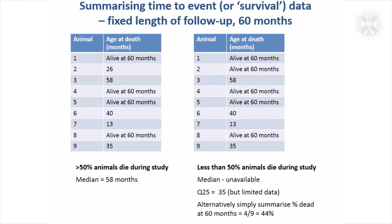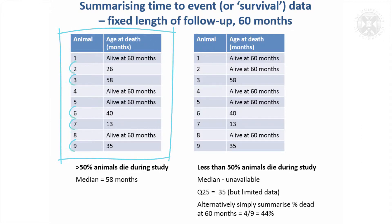Looking at some very simple hypothetical examples so you can visualise this. If you've got a fixed length of follow-up — this imaginary study had a fixed follow-up of 60 months and there were nine animals on which we measured the age at death — in this first data set five of the animals have died, but at the end of the study four of them are still alive.